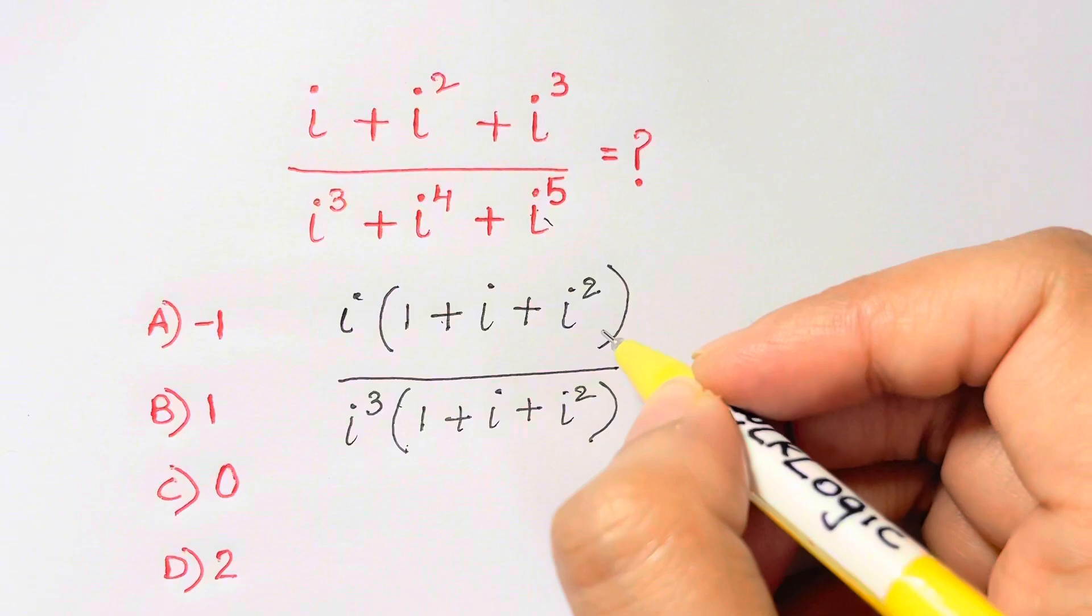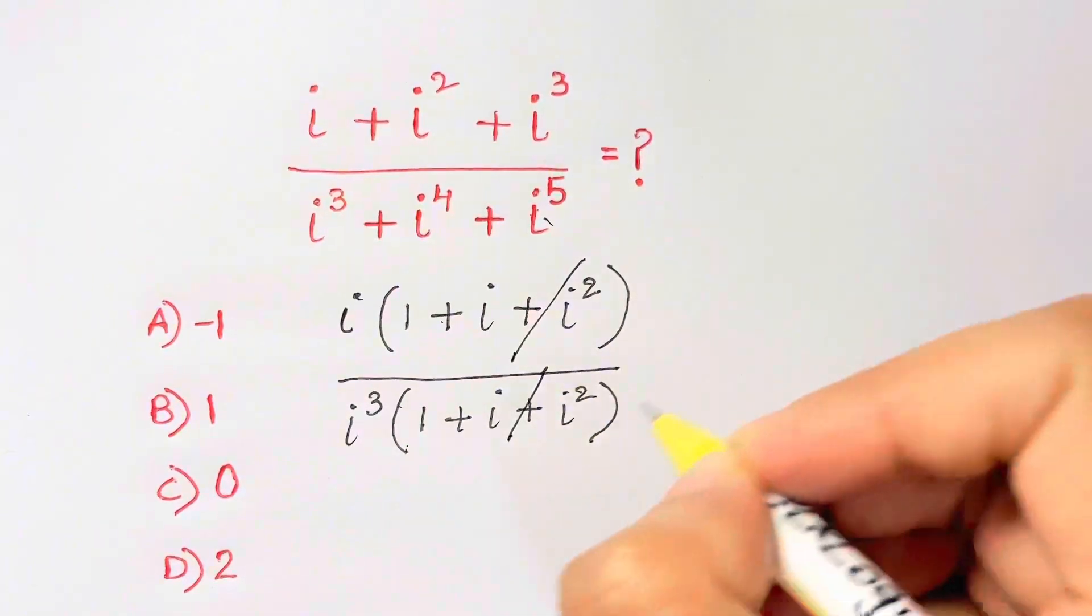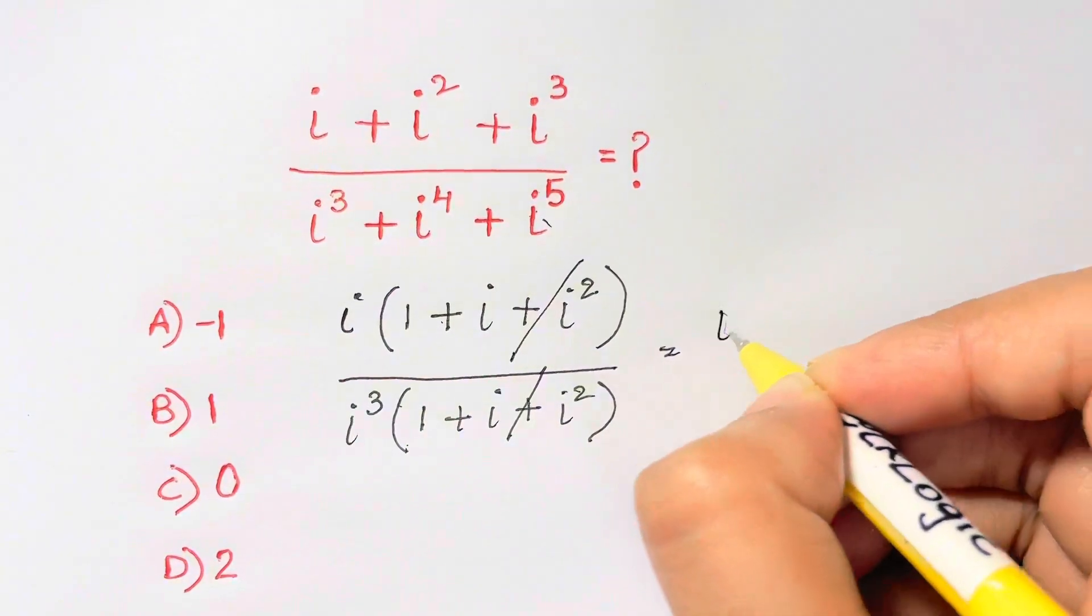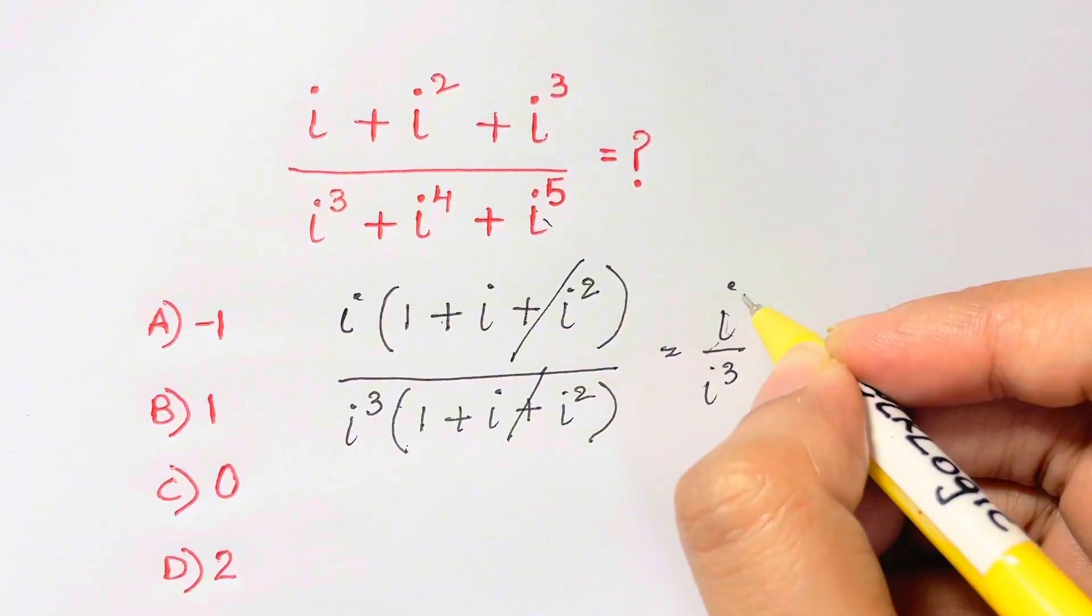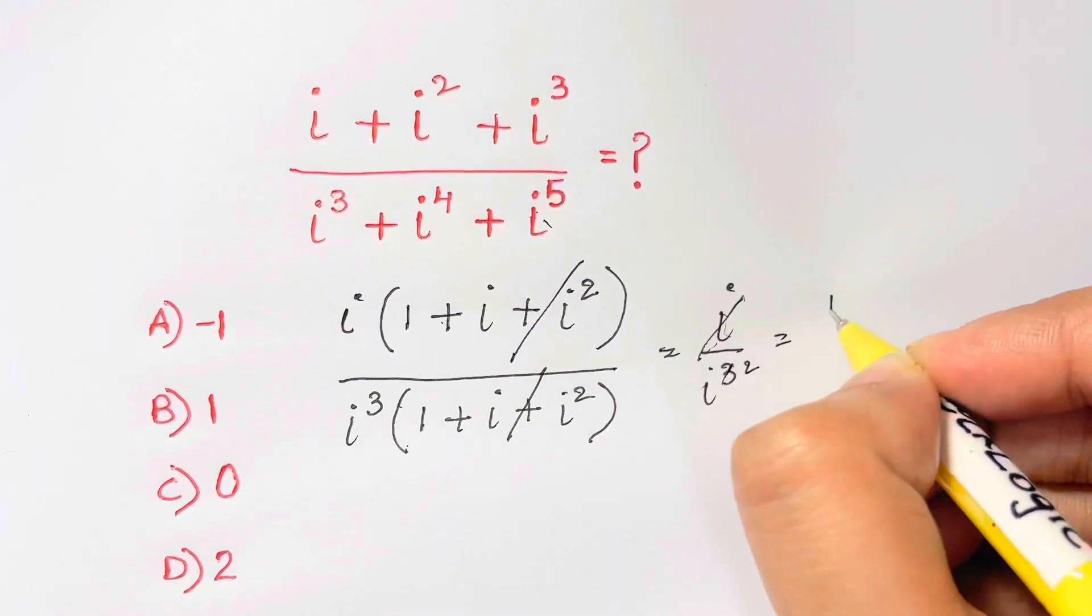Now the same thing you will find in top and bottom, cancelled out. So I'm left with i over i cubed and when you have same base and division, you subtract the powers. So 1 minus 3 is negative 2.